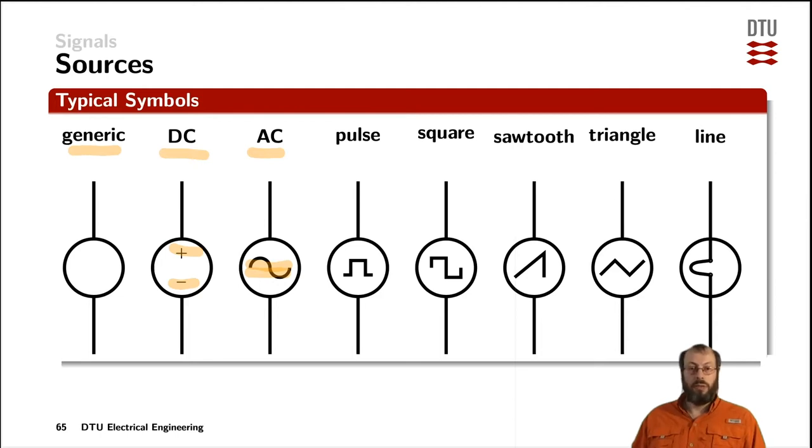And then there are more specific symbols for the specific waveforms. There are pulse signals, there are square signals which look very much alike but still a little bit different. A sawtooth is represented by something that looks very similar like the waveform itself, and a triangular signal.